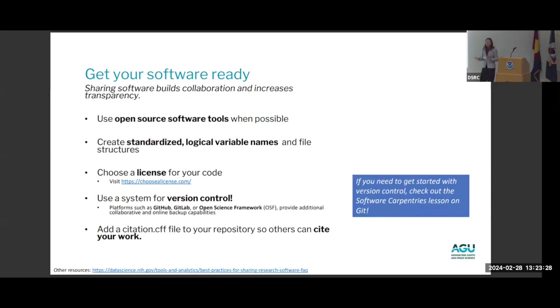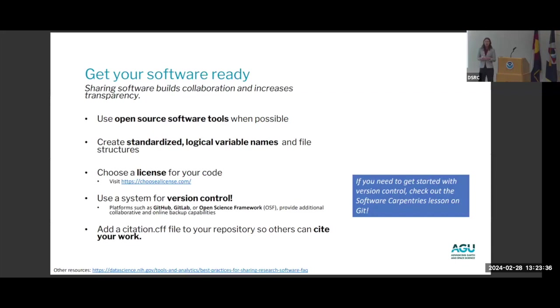Add a citation.cff file to your repository so that others can cite your work. This file lives in your GitHub repository and includes exactly the information others need to give you that citation when they use your model in a paper, ensuring there's a link back to you for credit.